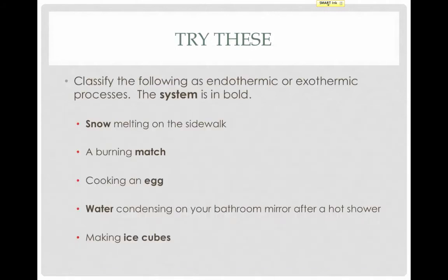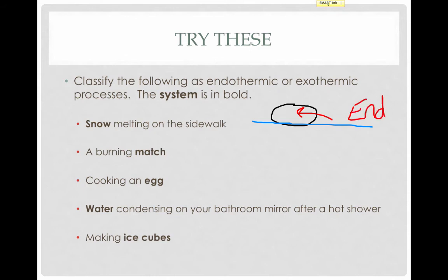Let's try classifying some common processes as endothermic or exothermic. Thinking about the first one, we have snow as our system and it's melting on a sidewalk. We can represent our snow, or the system, and our sidewalk, the surroundings. In order for snow to melt, energy has to flow from the surroundings into the system. Energy has to be gained by the snow in order for it to melt. Since energy is entering the system, this is an endothermic process.